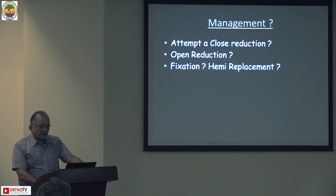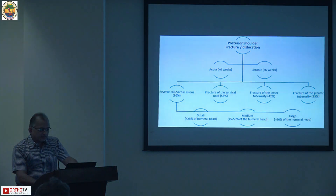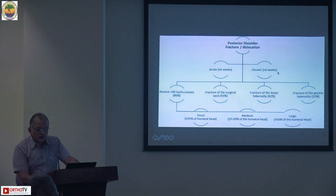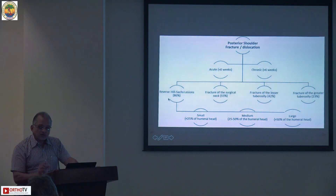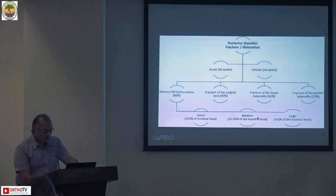Whether to do closed reduction, open reduction, and what fixation methods to use - one slide can summarize posterior fracture dislocation. Whether it is acute or chronic (chronic is beyond six weeks), and depending on the size of the Hill-Sachs or impression defect on the humeral head - small (less than 25%), medium (25 to 50%), or large (more than 50%) - the treatment differs in all three situations.